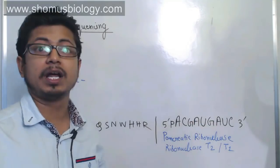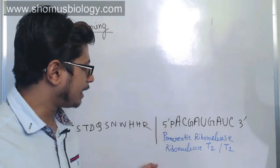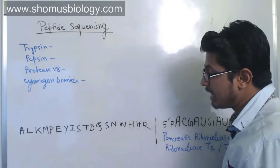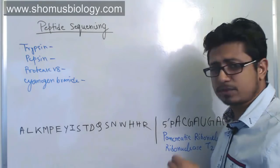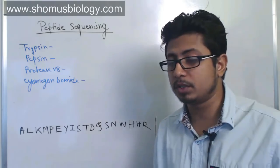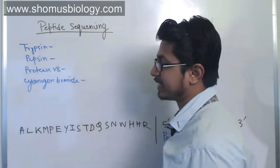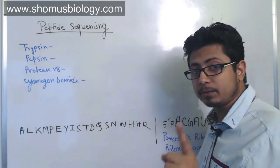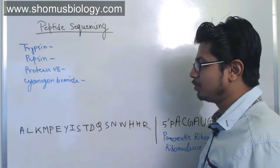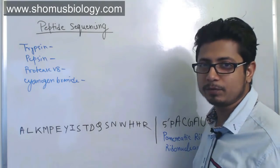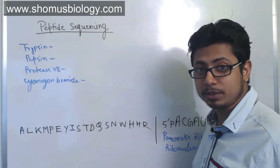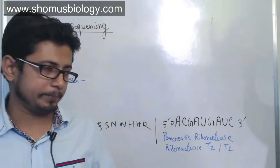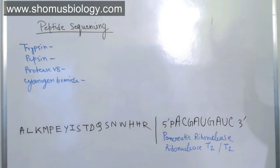For nucleotide sequences, if given an RNA sequence, pancreatic ribonuclease, ribonuclease T2, or ribonuclease T1 — where exactly do they cut? Let's first solve the polypeptide sequence question. It's quite easy because you only need to know the rules: where exactly trypsin cuts, where pepsin cuts, where protease V8 cuts. You also need to know the single-letter code of amino acids, because questions are always given in single-letter code rather than three-letter code.